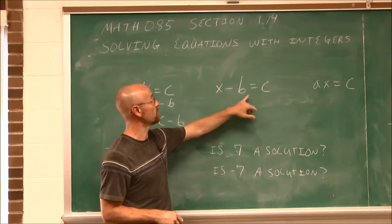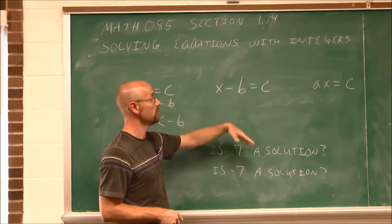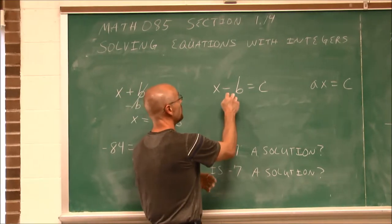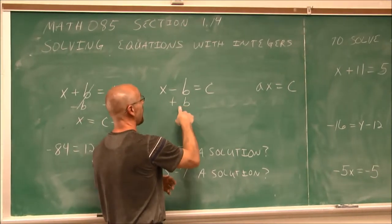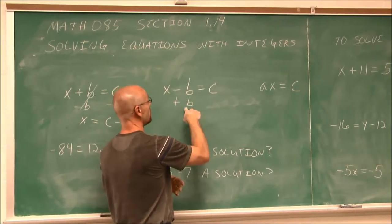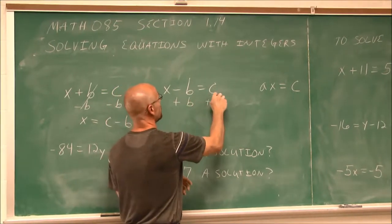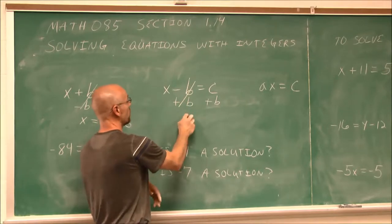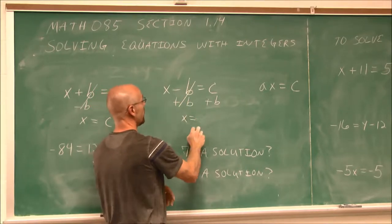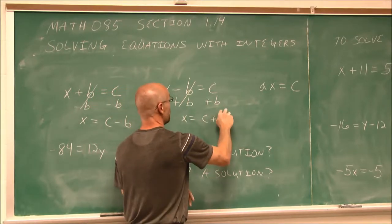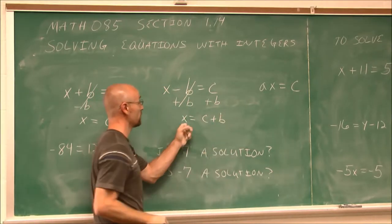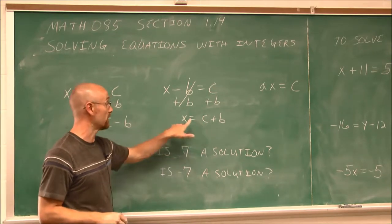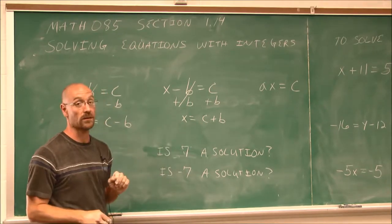Here I have subtraction — the same type of equation but a different operation. So instead of subtraction, I can add b. What I do to one side, I have to do to the other. I can think of that as going away, and x equals c plus b. Again, I've solved for x. Whatever c and b are, if I add them together, I will know what x is.